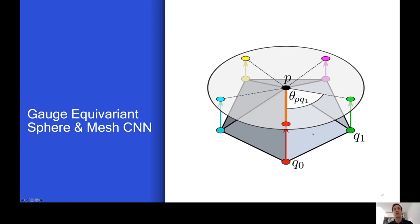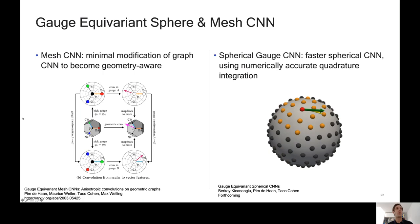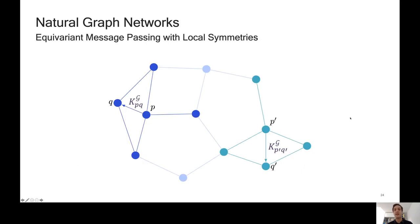Recently, we've been extending this to more general shapes. For example, general meshes, we have a mesh CNN, which you can already find on archive. This is basically a minimal modification of a graph convolutional net in order to take into account not just the topological structure of the graph, but also the geometry. So the positions and angles between the nodes and edges. And then we also have a new method for spherical CNNs, which unlike the icosahedral CNN does not introduce distortion. And unlike the earlier spherical CNN does not use a Fourier transform, but a quadrature integration to get numerically precise results in an efficient manner.